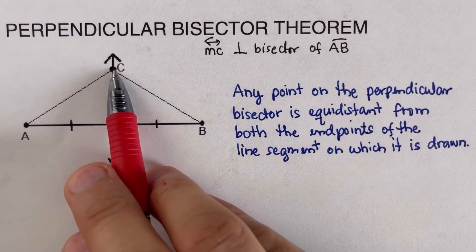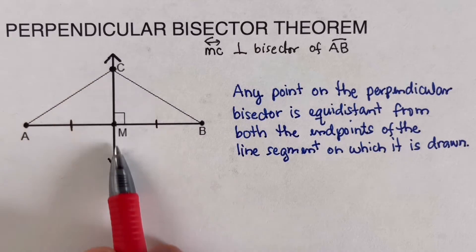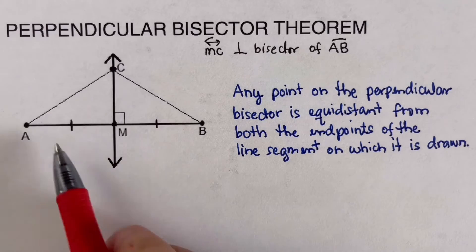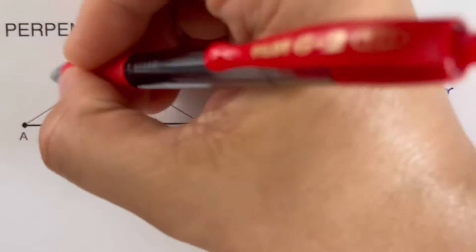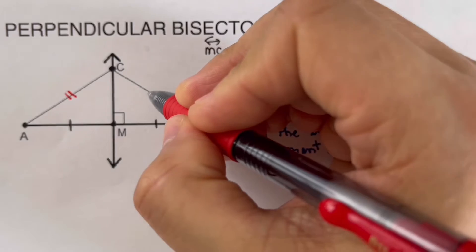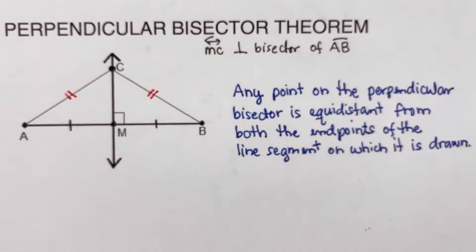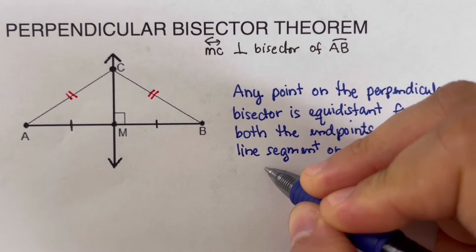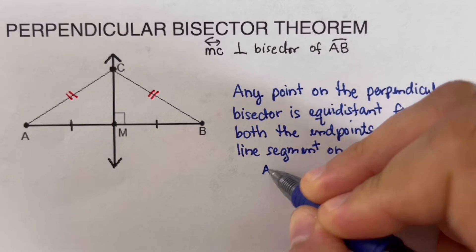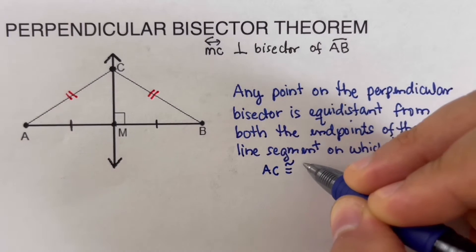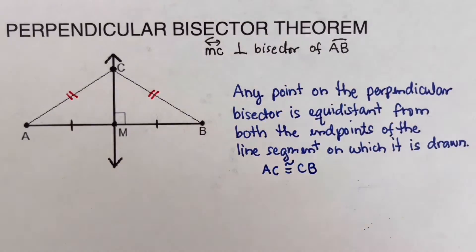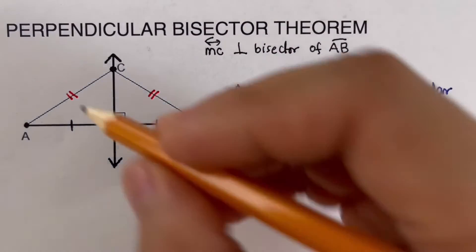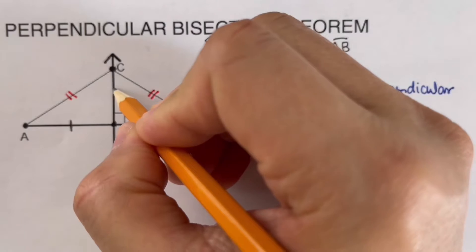Since point C is on the perpendicular bisector, we can say that AC is congruent to CB. Now, what happens if we add more points on the bisector?